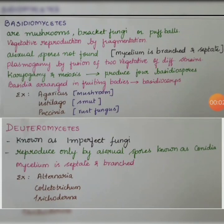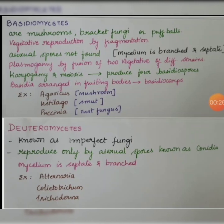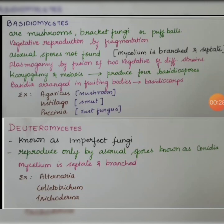Basidiomycetes are mushrooms, bracket fungi or puffballs. They reproduce through vegetative reproduction by the fragmentation method. Asexual spores are not formed, while their mycelium is branched and septate. Plasmogamy happens through the fusion of two vegetative cells of different strains, and karyogamy and meiosis result in the formation of four basidiospores.